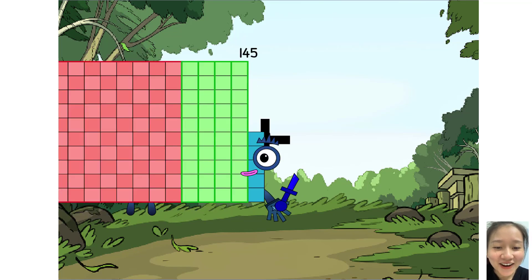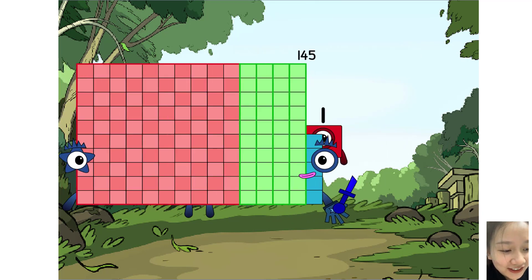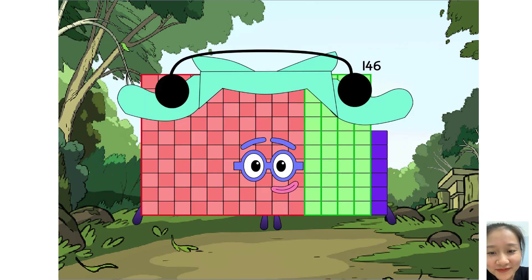145 plus 1 equals 146. Yeah, 146 has 4 colors: the green, the red, the pink, and the blue. Now, next question.